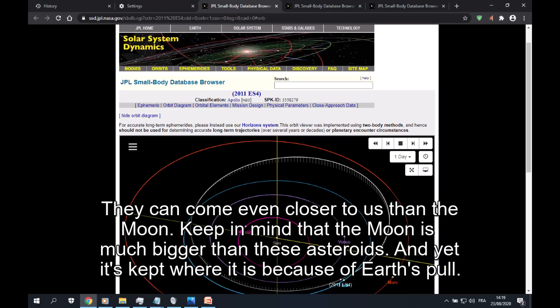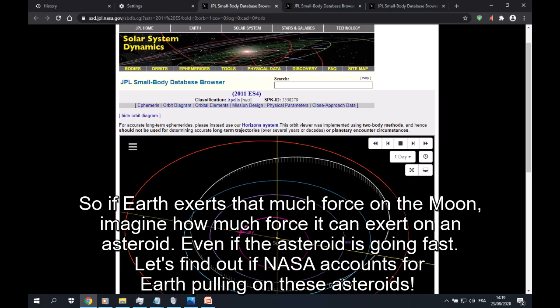They can come even closer to us than the Moon. Keep in mind that the Moon is much bigger than these asteroids, and yet it's kept where it is because of Earth's pull. So if Earth exerts that much force on the Moon, imagine how much force it can exert on an asteroid, even if the asteroid is going fast.